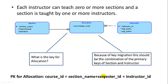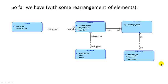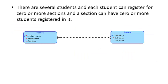This is what explains all of this. We have put together everything that we've done so far, and this is where we are: course, section, allocation, semester, instructor. This is just a combination of all the diagrams we have looked at up to now.